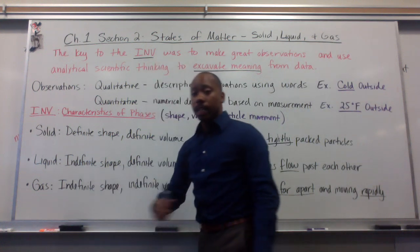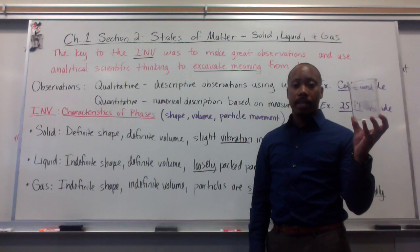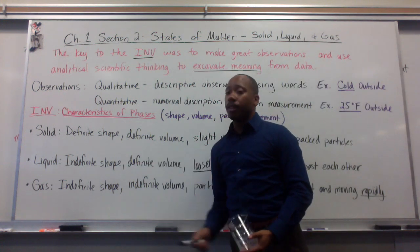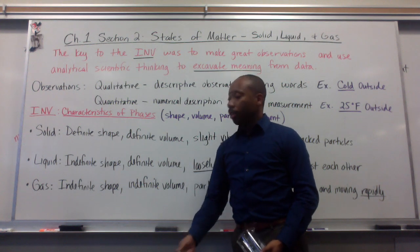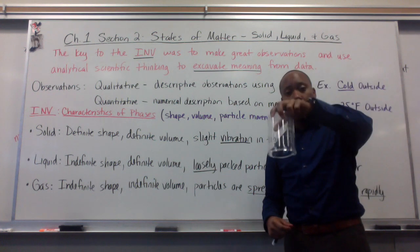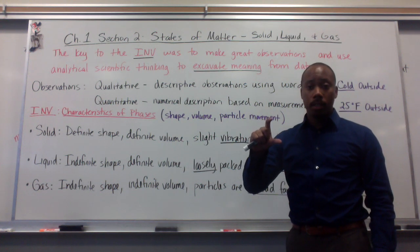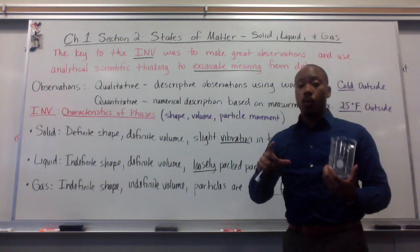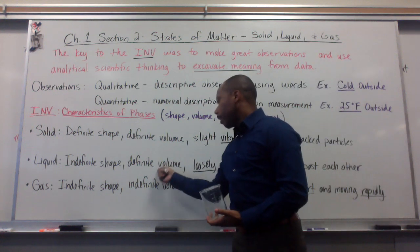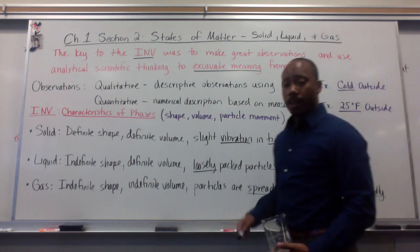A liquid has an indefinite shape, meaning it takes the shape of its container. If I were to put liquid water into this beaker, it would take the shape of the beaker; if I poured it flat on the table, it would take the shape of the table. But a liquid has a definite volume. If I put 20 milliliters of water here and poured it into a cup, it would still contain 20 milliliters — it would not expand to 50 milliliters just because the cup was that big. The particles in a liquid are loosely packed and flowing past each other, moving slightly faster than in a solid.